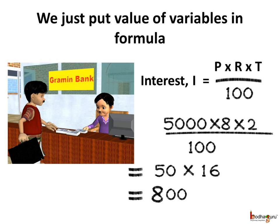Here P is equal to 5000, rate is 8%. Say he has to pay back the loan after 2 years, so T becomes 2 and then we get the value of interest. I is equal to 5000 multiplied by 8 multiplied by 2 upon 100, which means 50 is left. So we get 50 multiplied by 8 multiplied by 2, which is equal to 50 multiplied by 16, and we get the answer as 800 rupees. So we just put the values of variables in the formula and get the answer. In some other cases the value would be different but the formula is the same.